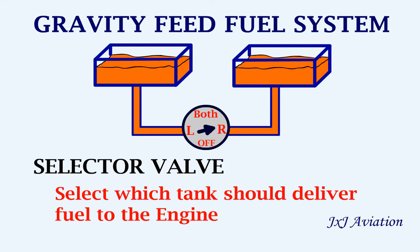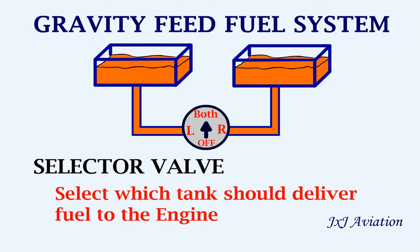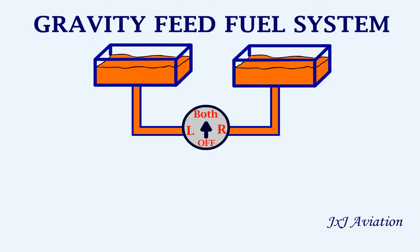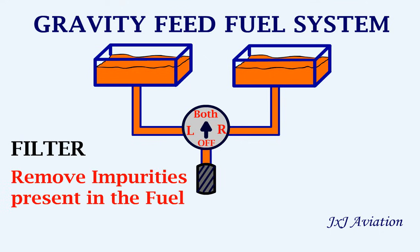But under normal operations, the fuel is taken from both the tanks. The valve can also be set to cut off the fuel supply to the engine in case of an emergency. After the selector valve, the fuel flows through a filter. This filter is used to remove any impurities in the fuel.